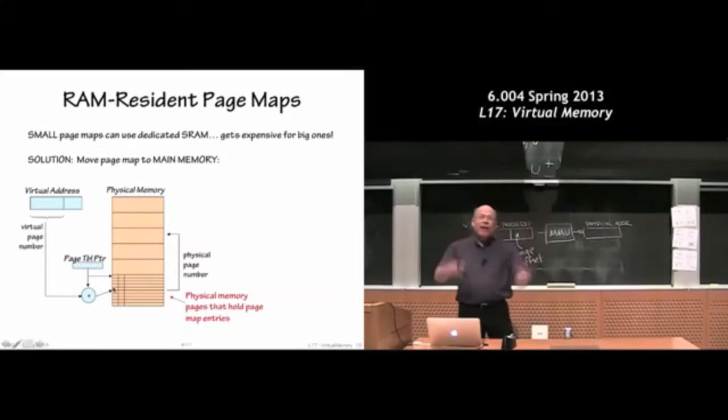And I'll fetch the physical page, then I'll get the page table entry and then I can complete the translation to the actual physical address and I can go get it from main memory. So I'm actually accessing main memory twice now, every time I want something from it.